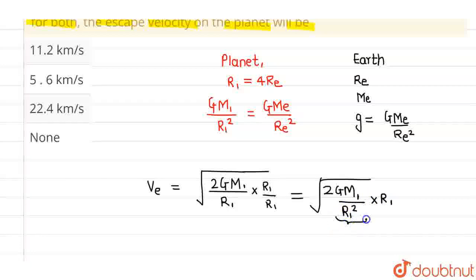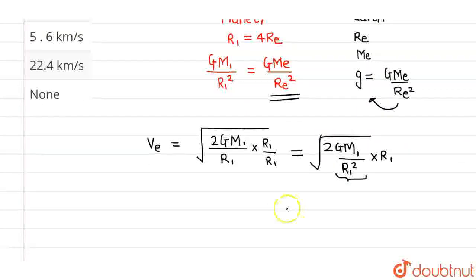Now we know that this particular thing, which is Gm1 by R1 square, equals GMe divided by Re square, and the same value is nothing but acceleration due to gravity, which is g.